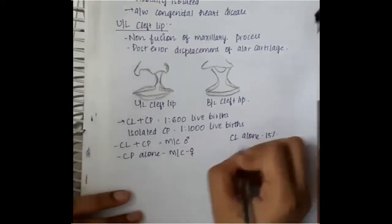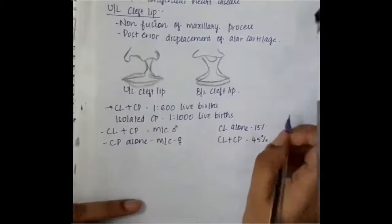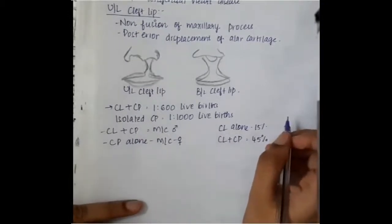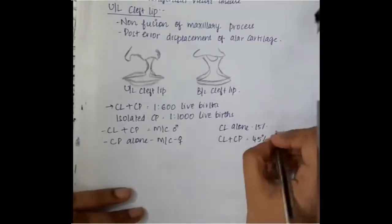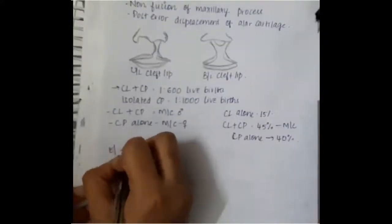Cleft lip alone is seen in 15% of individuals. Cleft lip with cleft palate is seen in 45% and it is most common. Combined cleft lip and combined cleft palate is most common. Then cleft palate alone is seen in 40% of individuals.